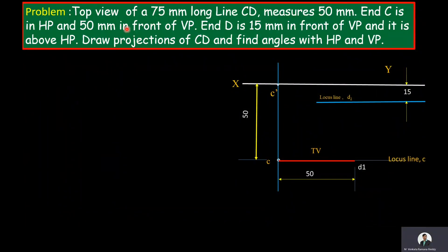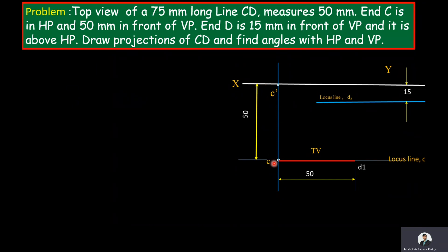The top view of a 75 mm long line CD measures 50 mm — that means the true length of the line is 75 mm and the top view length is 50 mm. End C is in HP and 50 mm in front of VP, so the front view image of C, that is C-dash, is on the XY line, and the top view image of C is 50 mm below the XY line. End D is 15 mm in front of VP, so its top view image, lowercase d, is 15 mm below the XY line.